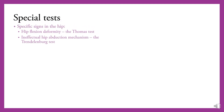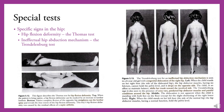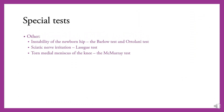For special tests, specific signs in the hip can be tested by the Thomas test and Trendelenburg test. The Thomas test assesses hip flexion deformity, whereas the Trendelenburg test assesses the ineffectual hip abduction mechanism. Other special tests include the Barlow and Ortolani tests for instability of the newborn hip, the straight leg raise (SLR) test for sciatic nerve irritation, and the McMurray test for torn medial meniscus of the knee.